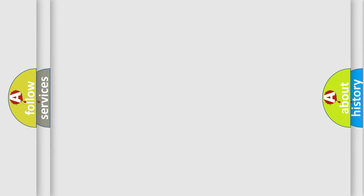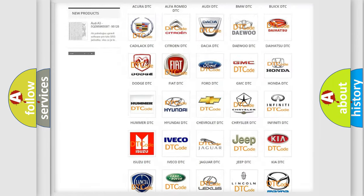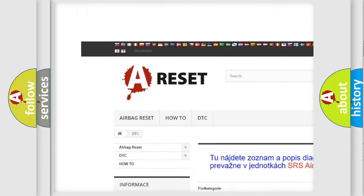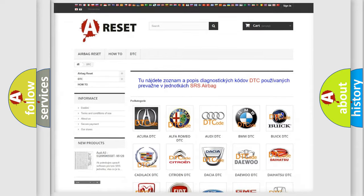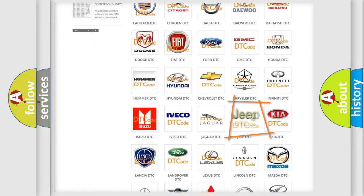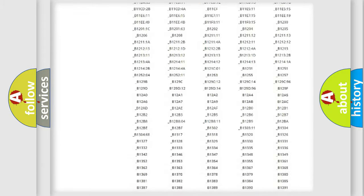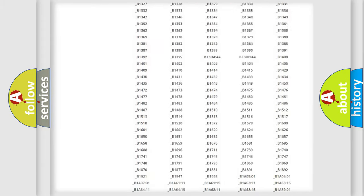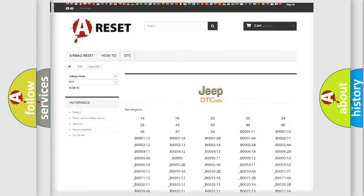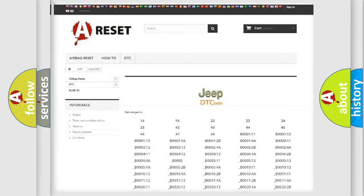Our website airbagreset.sk produces useful videos for you. You do not have to go through the OBD2 protocol anymore to know how to troubleshoot any car breakdown. You will find all the diagnostic codes that can be diagnosed in Jeep vehicles and also many other useful things.